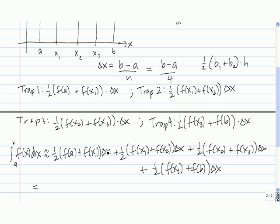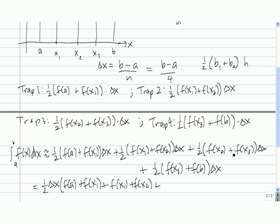One half delta x is the same as delta x over 2. Factoring out one half delta x, in the first term we have f of a plus f of x sub 1; in the second, f of x sub 1 plus f of x sub 2; then f of x sub 2 plus f of x sub 3; and finally f of x sub 3 plus f of b.